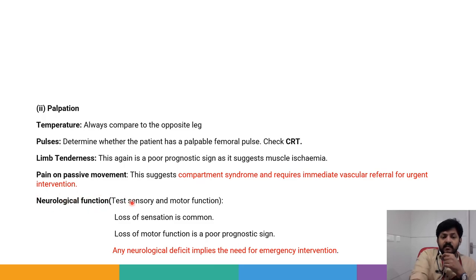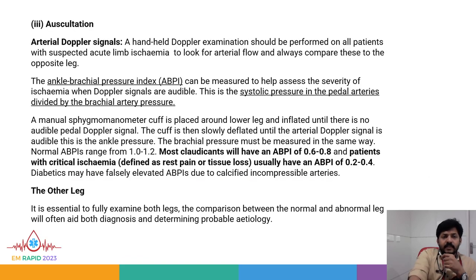Always check neurological function — test both sensory and motor function. Loss of sensation is common; loss of motor function is a poor prognostic sign. Any neurological deficit implies the need for emergency intervention. On auscultation, perform handheld Doppler for all patients with suspected acute limb ischemia to look for arterial flow, and always compare to the opposite leg. Also perform ankle-brachial pressure index (ABPI) to help assess severity of ischemia when Doppler signals are audible.